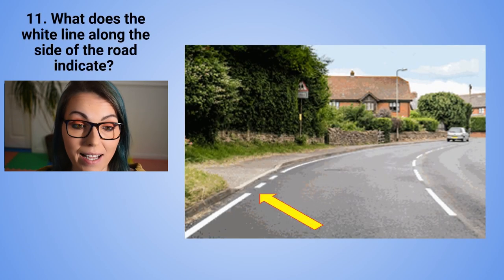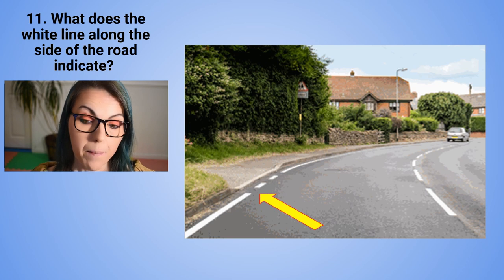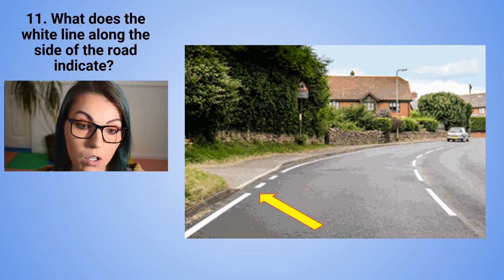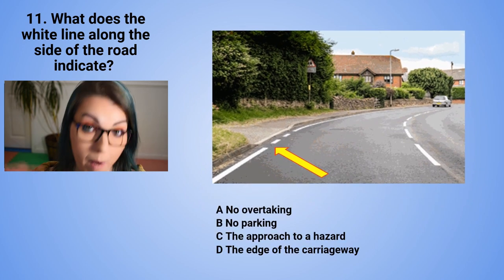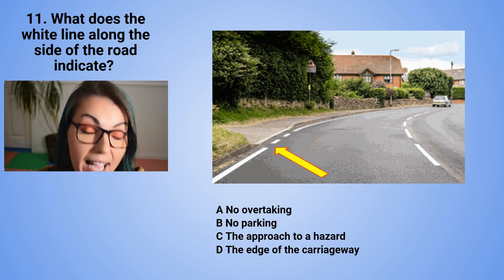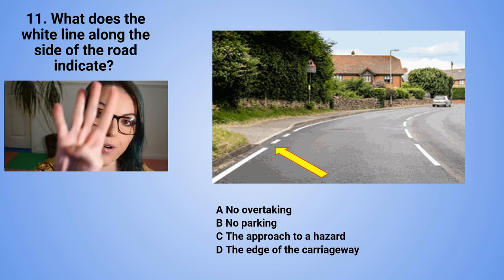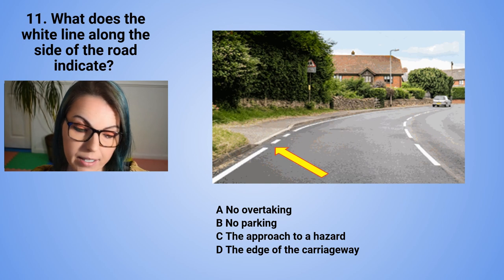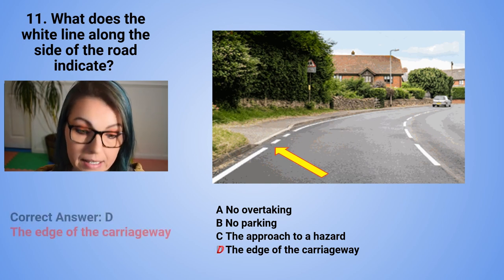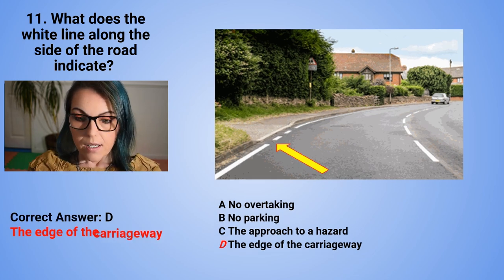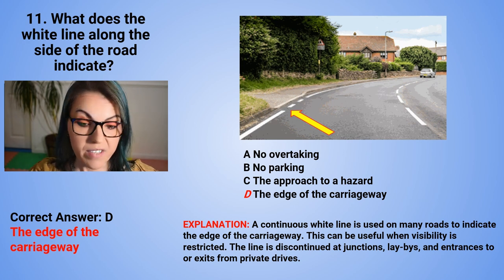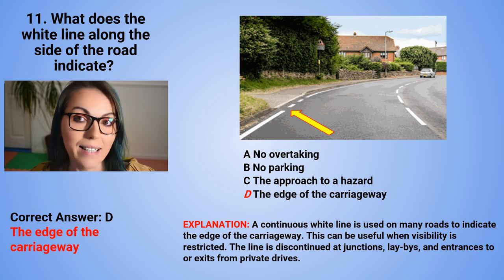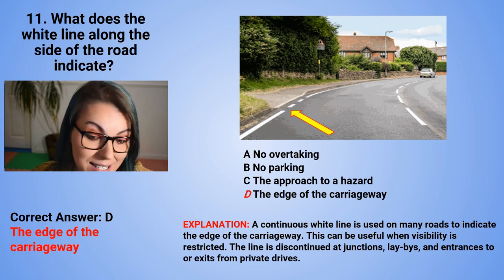Question 11: What does the white line along the side of the road indicate? Please pay attention to the yellow arrow showing the line along the side of the road. A. No overtaking. B. No parking. C. The approach of a hazard. Or D. The edge of the carriageway. The correct answer is D — the edge of the carriageway. A continuous white line is used on many roads to indicate the edge of the carriageway, which can be useful when visibility is restricted. The line is discontinued at junctions, lay-bys, and entrances to or exits from private drives.